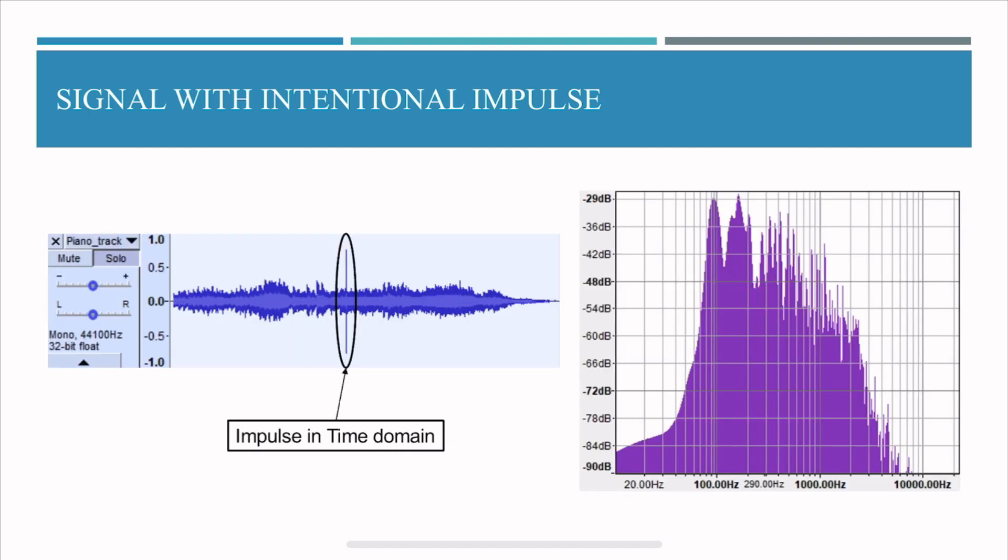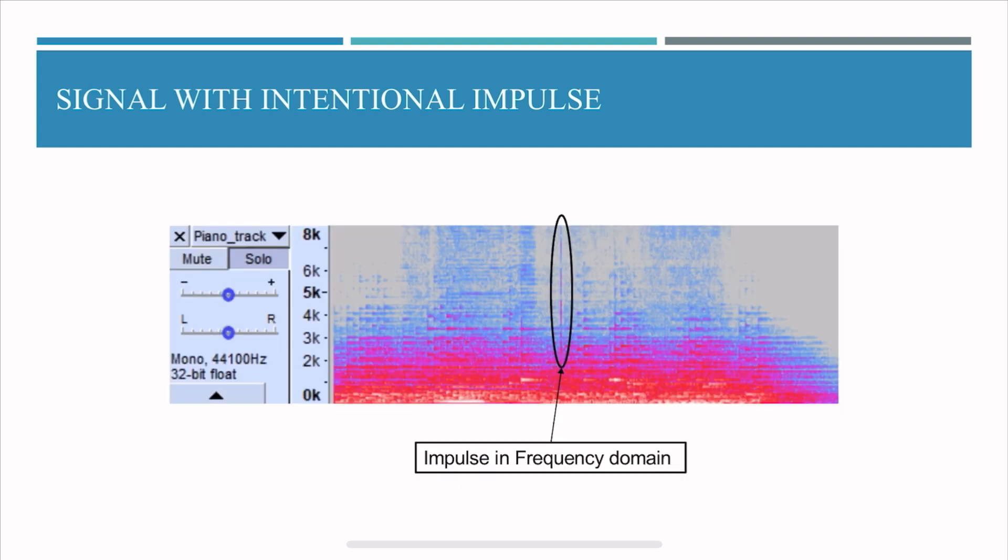And you can quickly know that okay at this particular instant is this impulse present, so we go back to the time trace and say okay at this particular impulse let's remove that impulse. So it's a very quick way of checking and concluding to remove the impulse. This is just one use case, I'm sure there are a lot of many use cases.